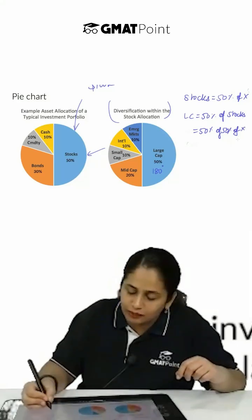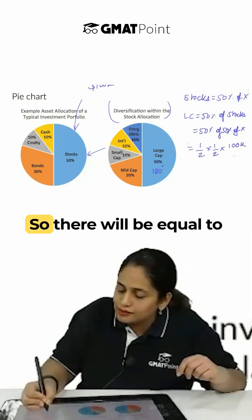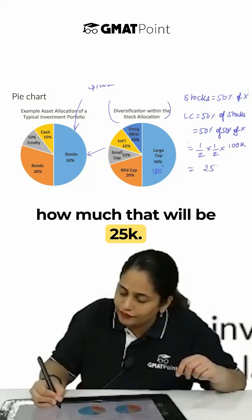So if x is equal to 100k, this is half into half into 100k. So there will be equal to how much? That will be 25k.